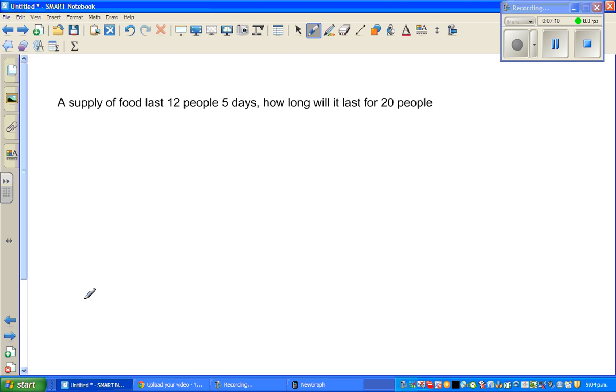Next example. A supply of food lasts 12 people 5 days. How long does it last for 20 people? So you've got people and days. So let me write people, P for people and D for days. So we've got 12 people. The food will last for 5 days. And you want to find for 20 people, how many days does it last? Now, before you do it, you use logic.